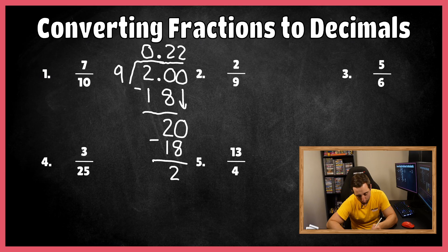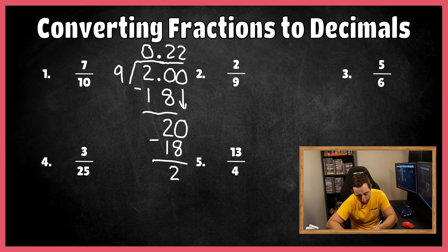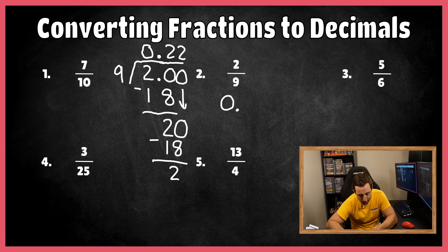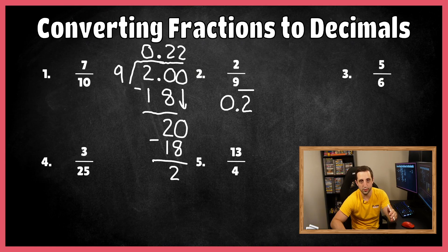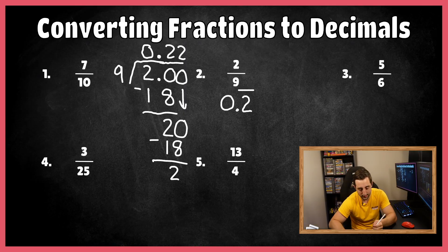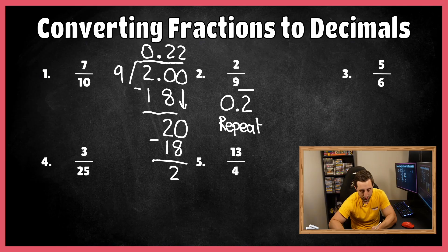All right, so our final answer is going to be 0.2 repeating. And if you're not sure how to write that, you are going to put 0.2. And instead of writing twos forever, all you want to do is put a bar notation over the two, signifying that that two is just repeating over and over and over again. So don't write out like 15 twos and then put a dot, dot, dot at the end. Just put bar notation, and that signifies that this is a repeating decimal.